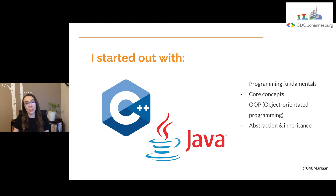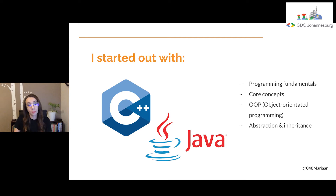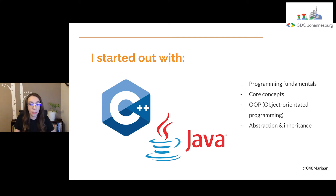My journey started as a software developer at university where I was taught how to program C++ and Java, which is usually the languages most colleges and universities choose, since it's great for teaching the fundamentals of programming and great to use for students to explain core concepts. This is mainly due to C++ and Java being object-oriented programming languages. For example, it's easier to implement and explain design patterns, different data structures and algorithms, and the concepts of inheritance and abstraction.